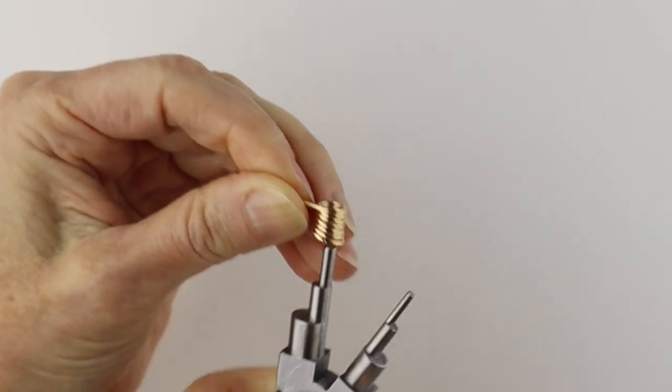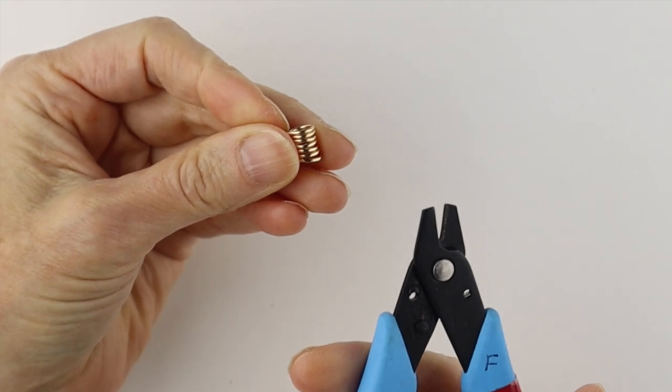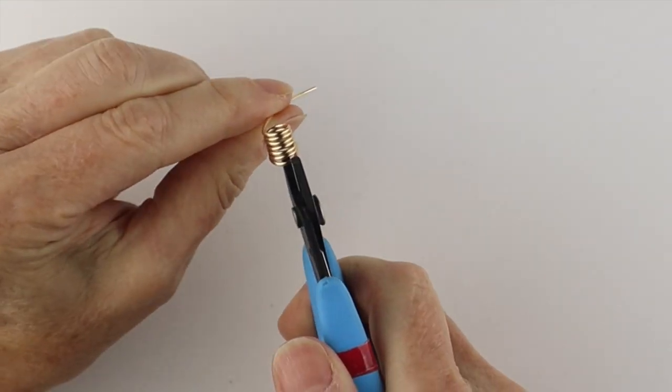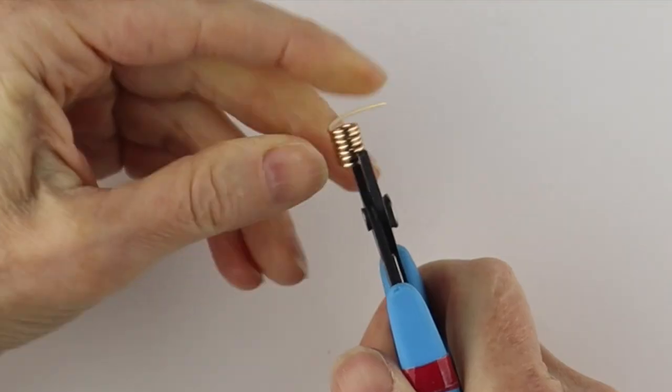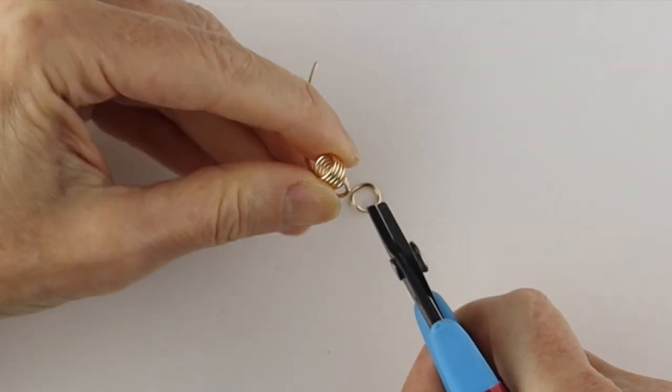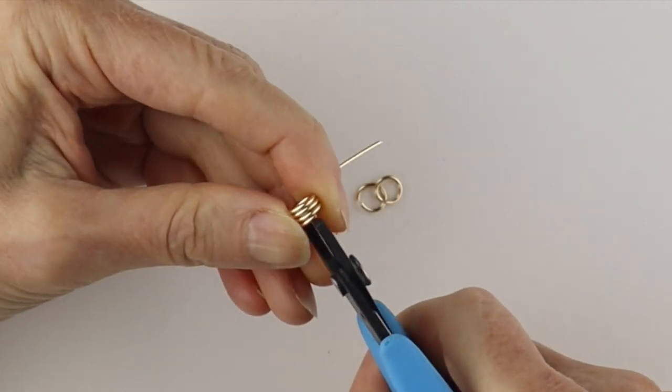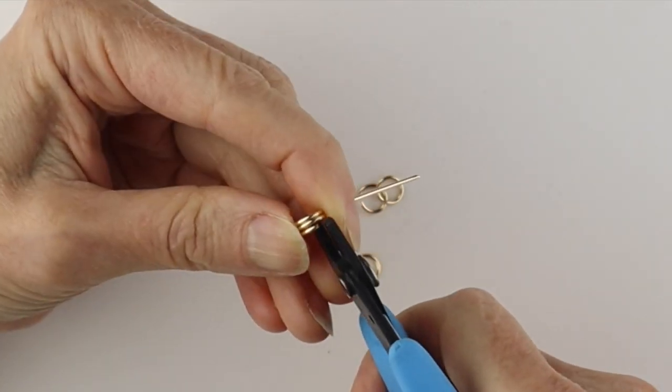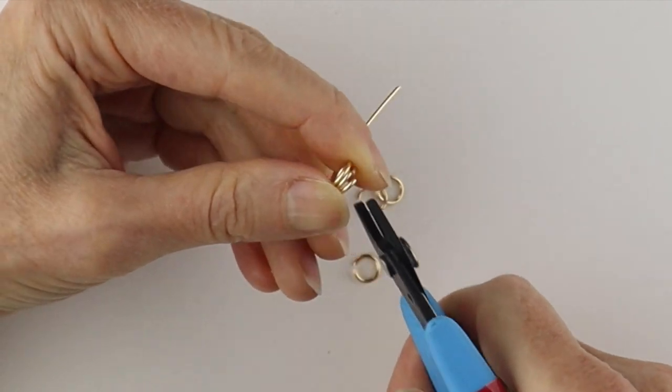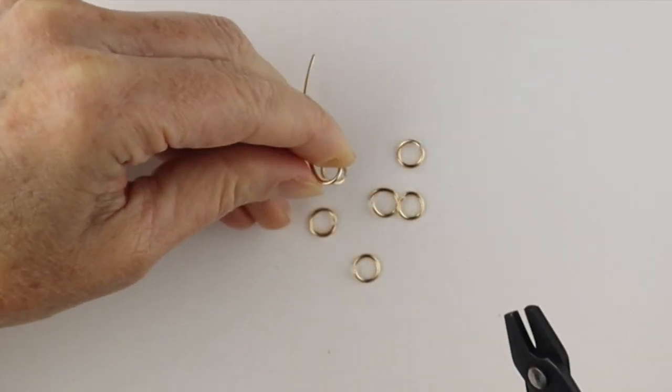Once you've filled that up, remove it, and now we can get our double flush cutters. Hold the end and we'll just cut and just keep working our way up. We're going to cut them one at a time, and we don't have to turn the rings around because both sides are flush.